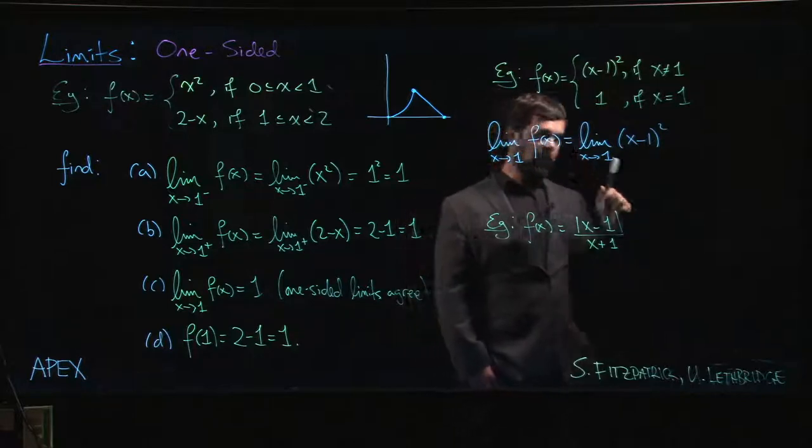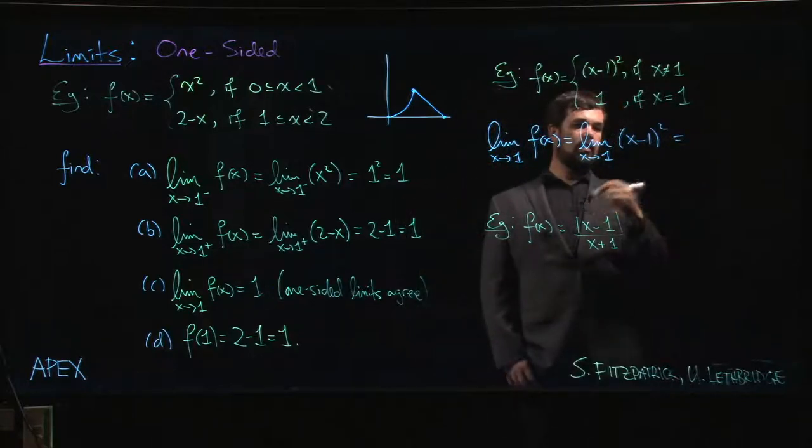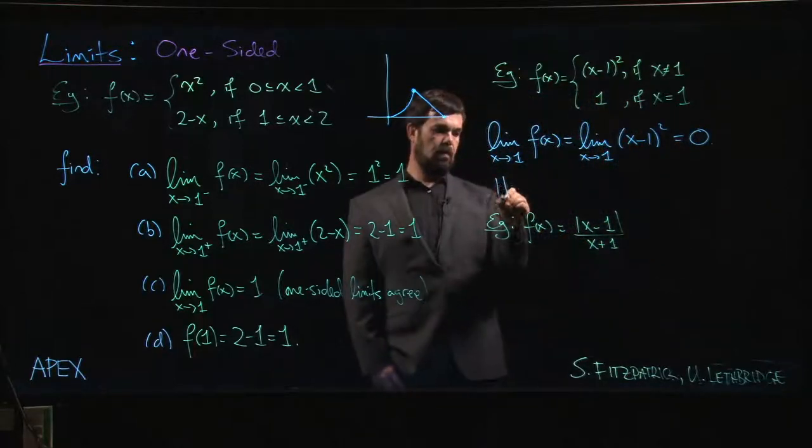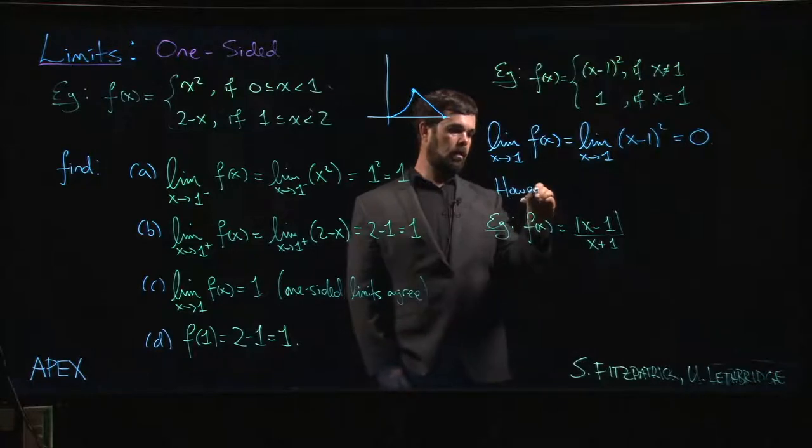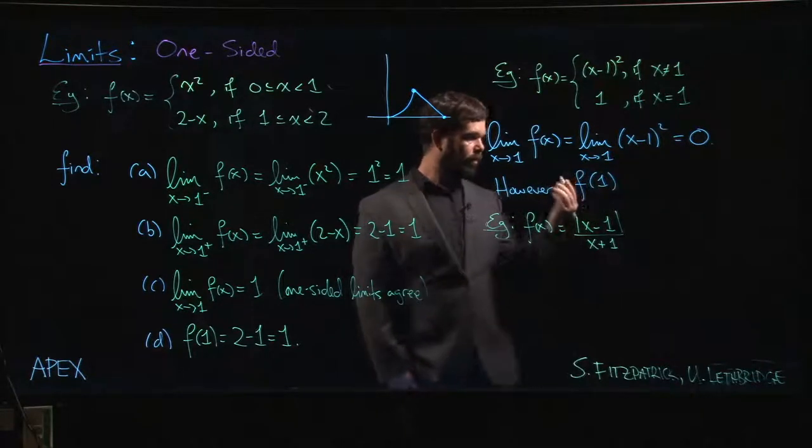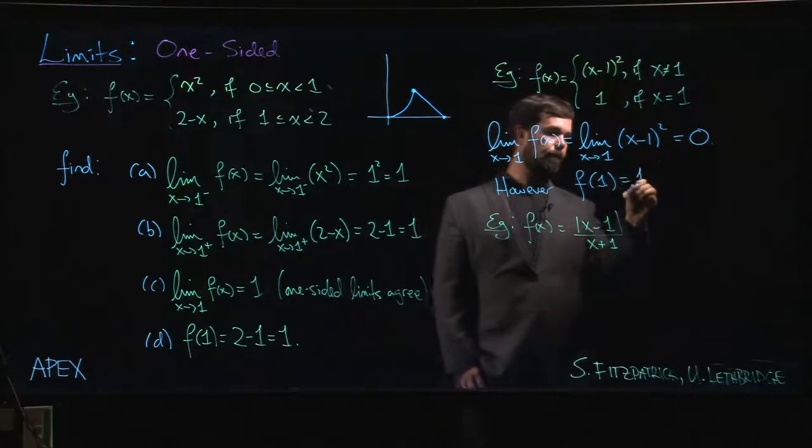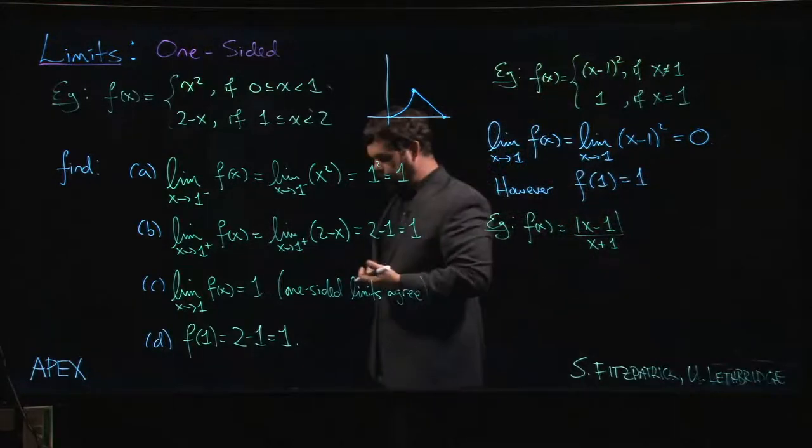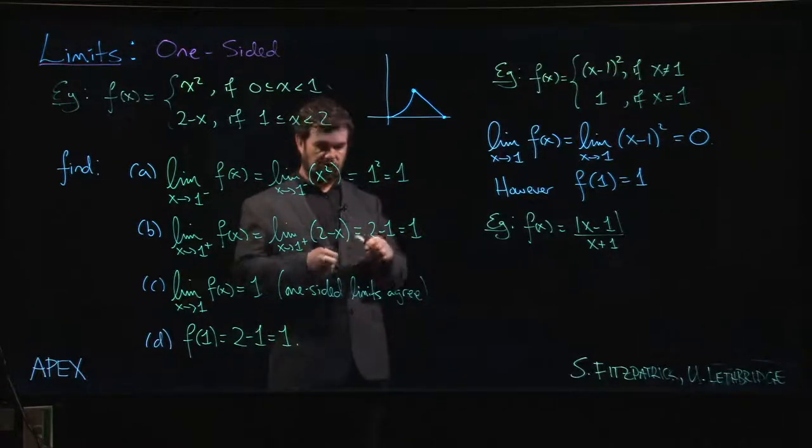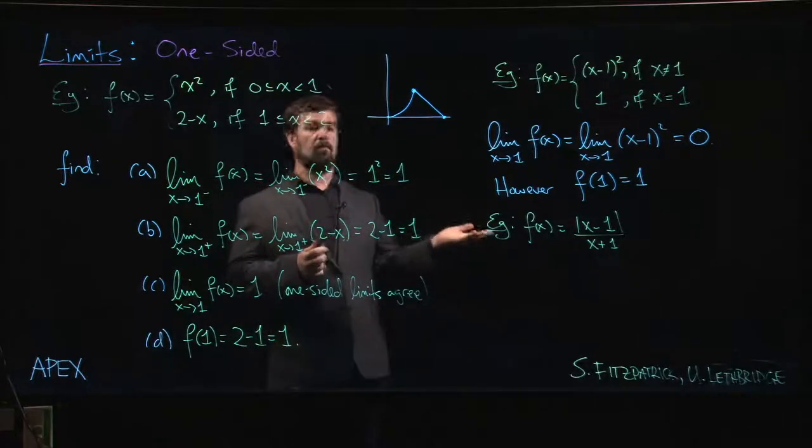Of course now we can do direct substitution. We plug in x equals 1 and we get 0. On the other hand, we can see by definition that f of 1 is equal to 1, it's not 0. So if we were seeing this sort of problem in the context of continuity, which as I mentioned is coming up soon, then our function would not be continuous because these values don't agree.